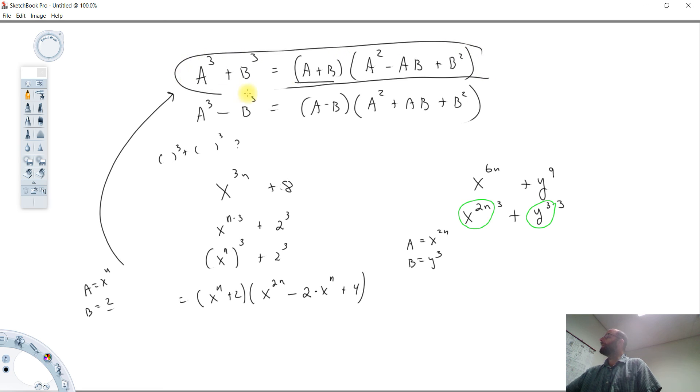So now we're just going to, again, apply our formula here for factoring the sum of 2 cubed. So the first term is a plus b. x to the 2n plus y to the 3rd times, okay,